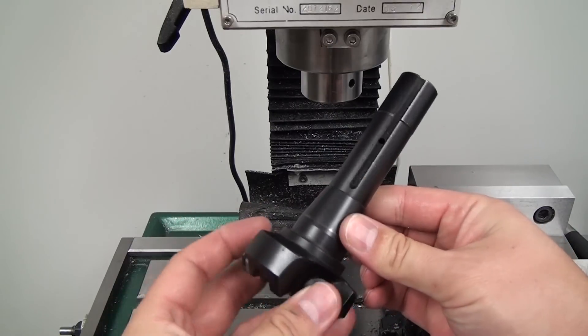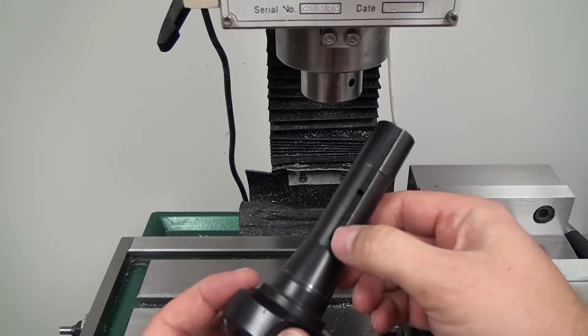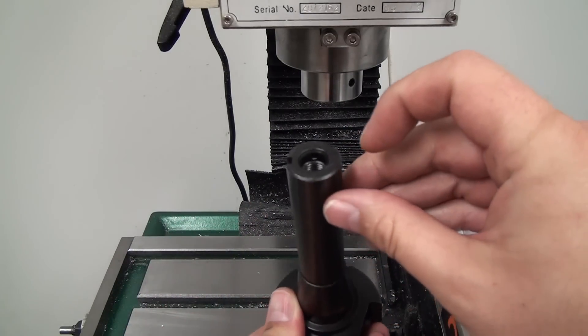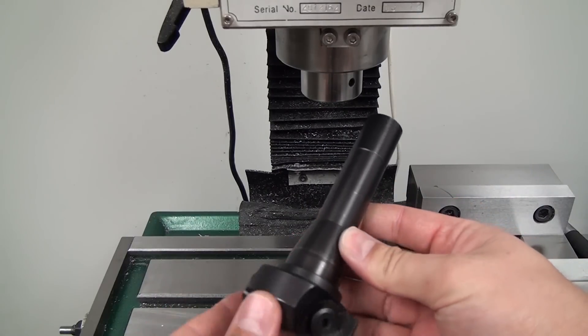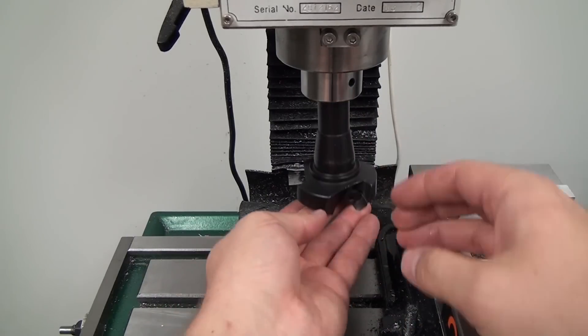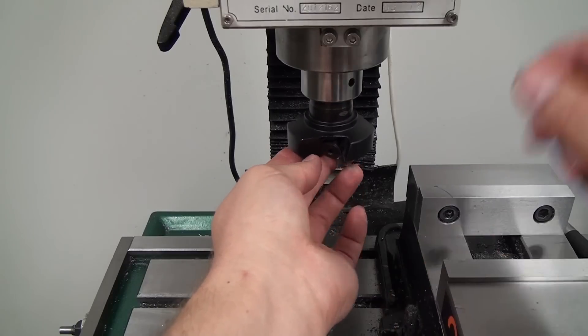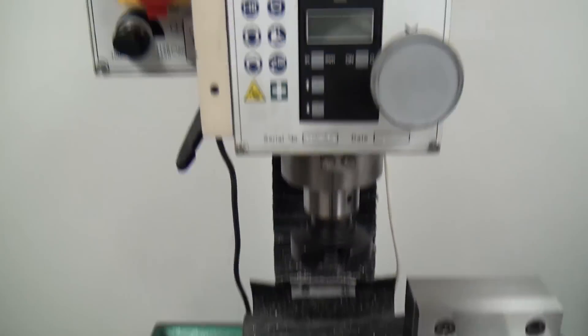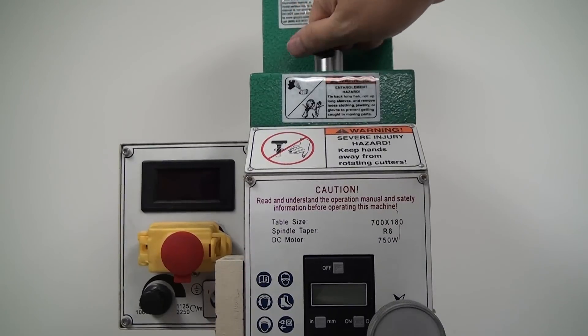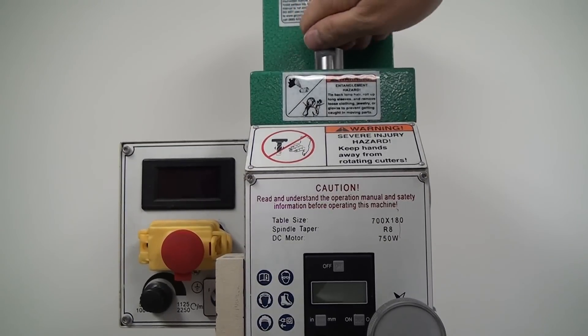So this is a face mill with an integral R8 arbor. You can see that there's a keyway machined into the shank and then there's a threaded hole at the top. This threaded hole is what the drawbar will engage to pull the tool up into the spindle, and then that keyway will index with a key that's inside the spindle and that keeps the tool from spinning in the spindle or slipping in the spindle.